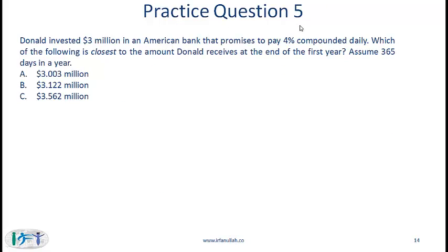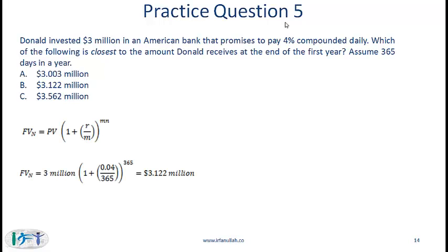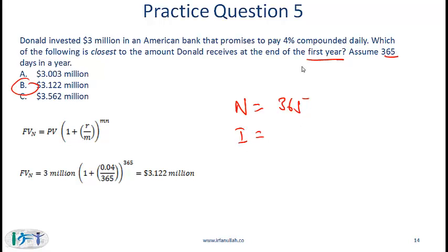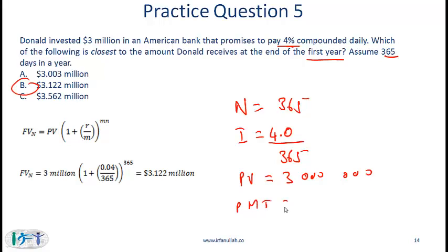Practice problem: the correct answer is B. You can use the formula or the calculator. For daily compounding over one year, N = 365. The interest rate per period is 4% ÷ 365 — that's the daily return. The present value is $3 million. Payments are 0. Compute the future value and you should get the answer shown.